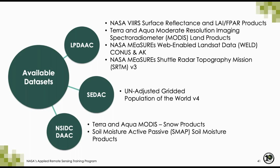From the Socioeconomic Data and Applications Center, there is the United Nations Adjusted Gridded Population of the World (GPW) version 4, and MODIS snow cover products from the National Snow and Ice Data Center. Also from NSIDC, the LP DAAC has recently made the Soil Moisture Active Passive (SMAP) soil moisture products available.